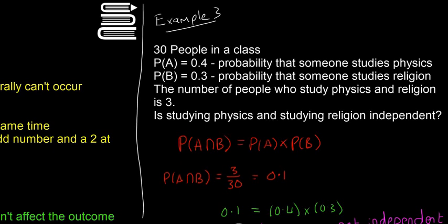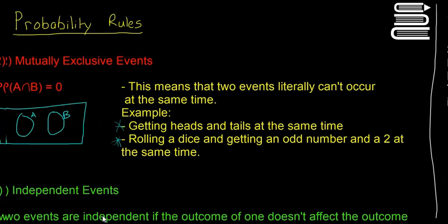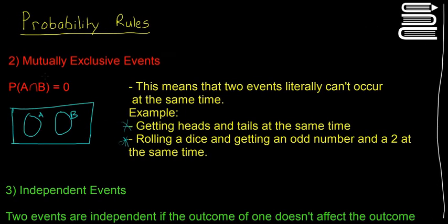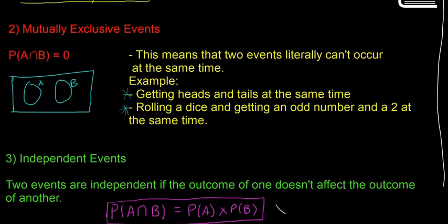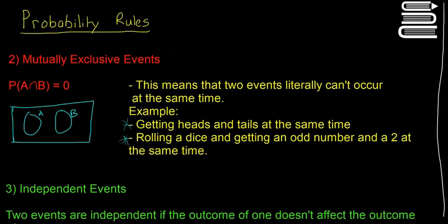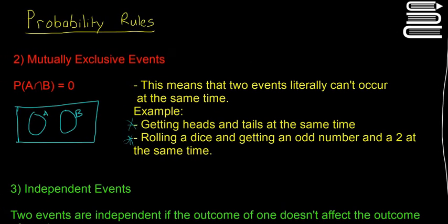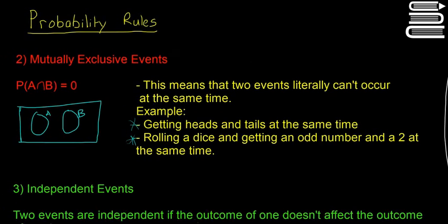Those are the other two probability rules, and we only have one left. For mutually exclusive events, you need to know the math definition, what it means, a Venn diagram, and an example. For independent events, know the definition — the outcome of one doesn't affect the outcome of another — the math definition, some examples, and how to use it in a question as we showed. In the next video we'll look at conditional probabilities. If you like the videos, don't forget to like and subscribe.